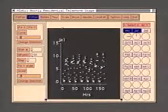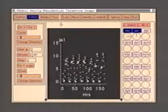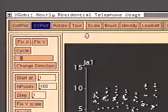The row of buttons above the plotting window is called the main control panel. The leftmost buttons of the main control panel, from dot plot to line edit, correspond to groups of similar graphical methods. We select one of these buttons by positioning the cursor and pressing a mouse button. We are about to select brush.